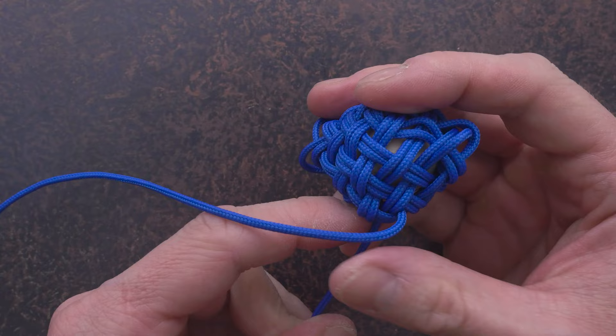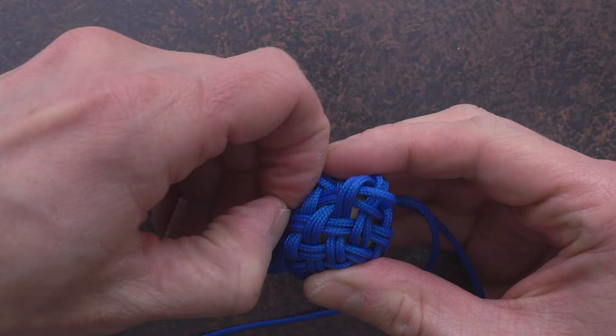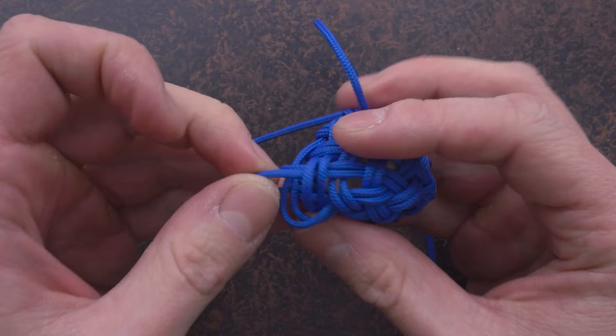We start at one end, just like on the mandrel, pulling slack through the knot into the other end. Do this one, maybe two times.